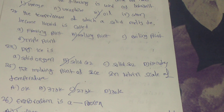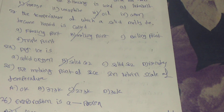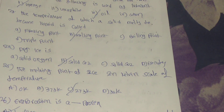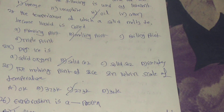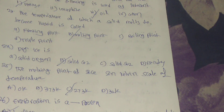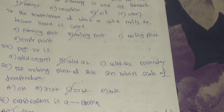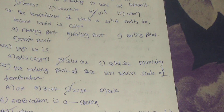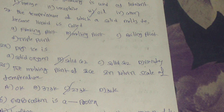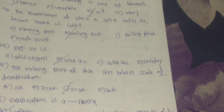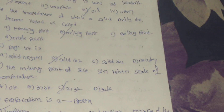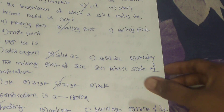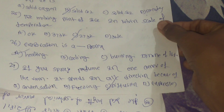25th question: the melting point of ice in the Kelvin scale of temperature. Answer is option C, 273 Kelvin. 26th question: evaporation is a blank process. Answer: option A, heating process.